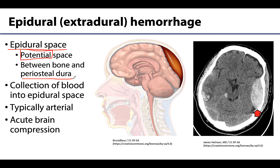It's important to note that the potential or pathological cranial epidural space is not continuous with the spinal epidural space. The cranial dura mater has two layers, whereas the spinal epidural space is a natural space occupied by epidural fat and venous plexuses. So they are not a continuous space — one is a natural space, whereas the cranial epidural space is a potential space.